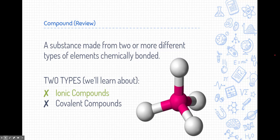There are two types of compounds we're going to be learning about. One of them is ionic compounds, which we're learning about in this module, and in a different module we'll learn about covalent compounds.